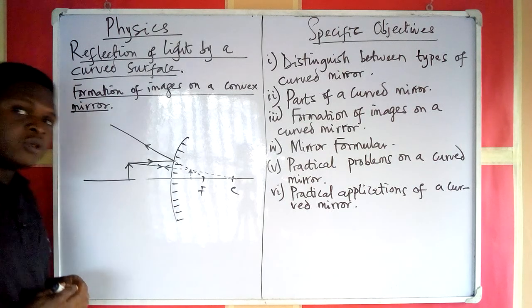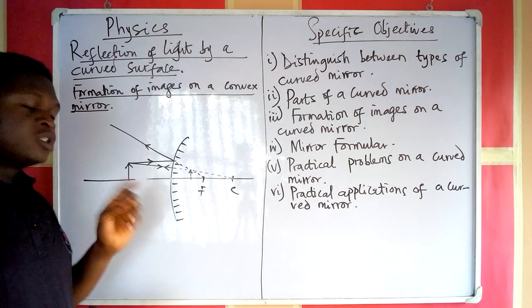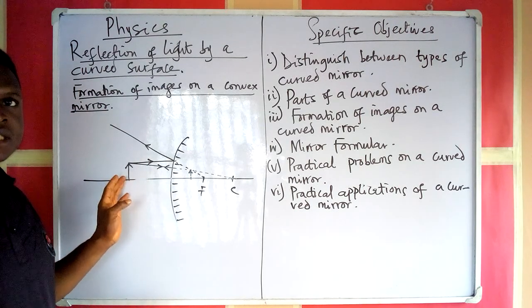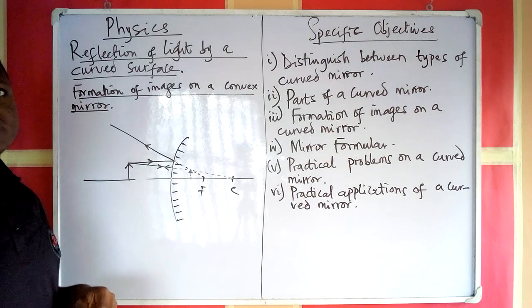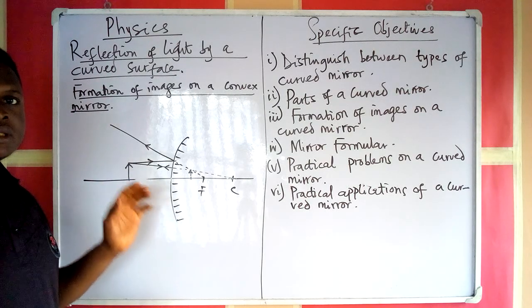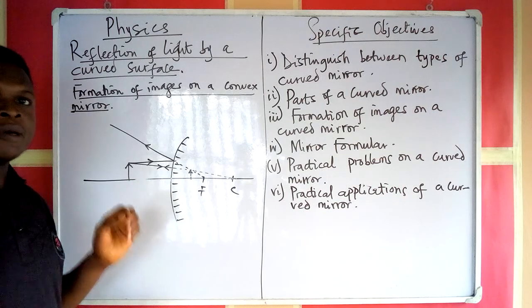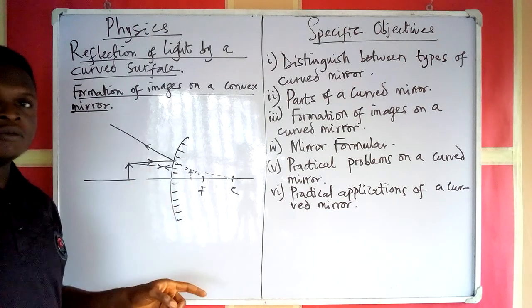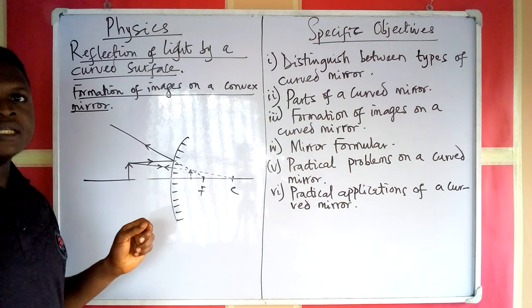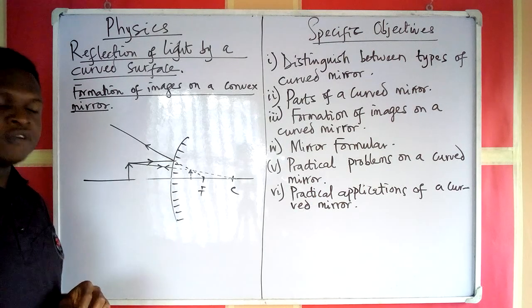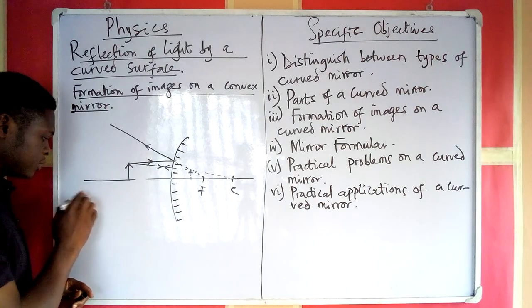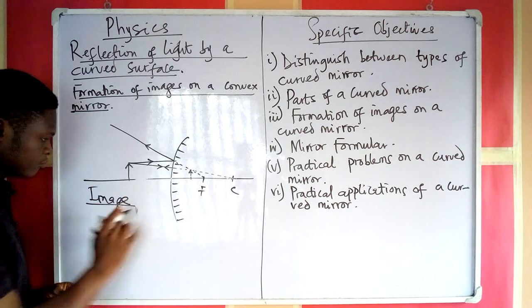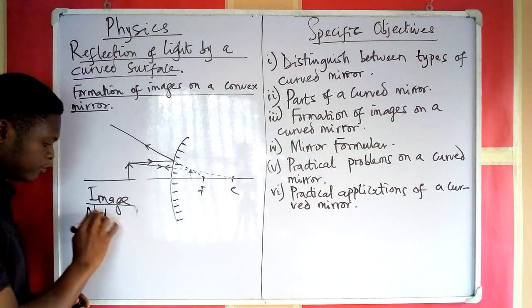Before we talk about the properties, I want to say something. Irrespective of the position of the object in front of the mirror, the properties we are going to obtain will remain the same. Remember that when we talk about properties, we are talking about the nature of the image formed, the size of the image formed, and the position of the image formed.